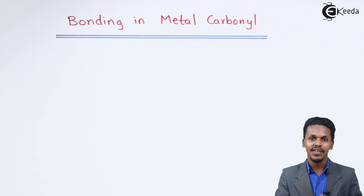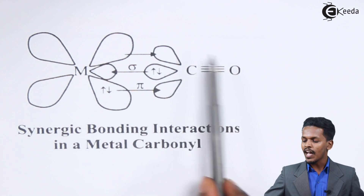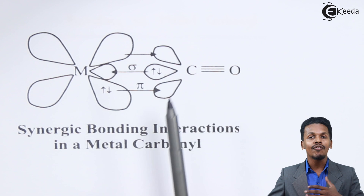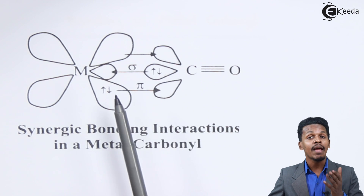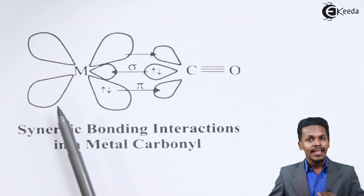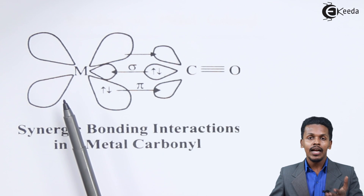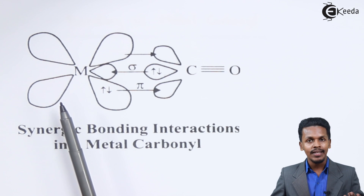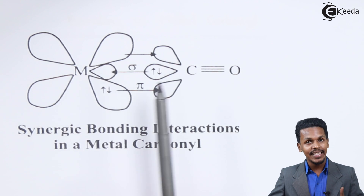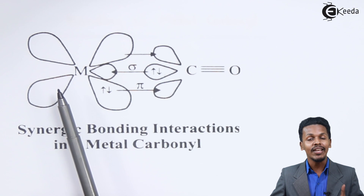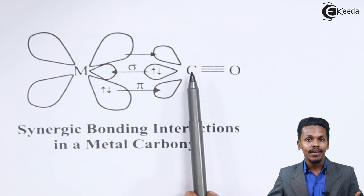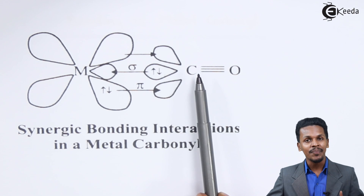The carbonyl is a ligand, and for that reason it will share a lone pair of electrons to the empty d-orbital of the metal. But the metal d-orbitals which are already filled also have the capacity to give back electrons — to donate electrons to the anti-bonding orbital of carbon monoxide.